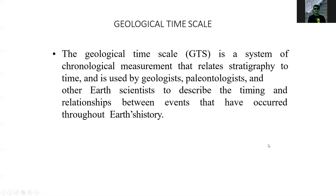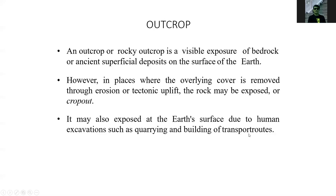The geological time scale, or GTS, is a system of chronological measurement that relates stratigraphy to time, used by geologists, paleontologists, and other earth scientists to describe the timing and relationships between events throughout earth history. A rocky outcrop is a visible exposure of bedrock or ancient superficial deposit on the surface of the earth. In places where the overlying cover is removed through erosion or tectonic uplift, rock may be exposed or crop out. It may also be exposed through human excavations such as quarrying and building of transport routes.